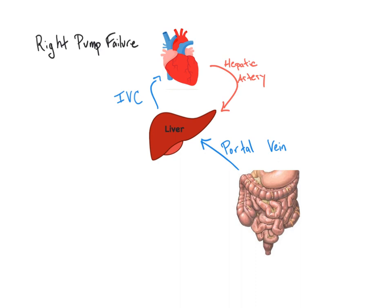Additionally, since the liver is a flow-through system involving both portal and systemic circulation, if the external tissues of the liver are scarred down, then the system can be impeded. This backs up the blood, causing portal hypertension.